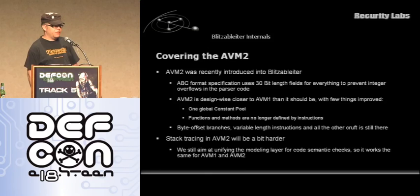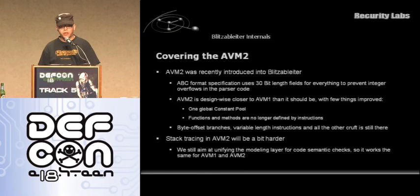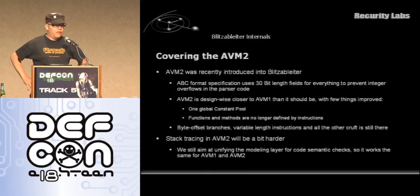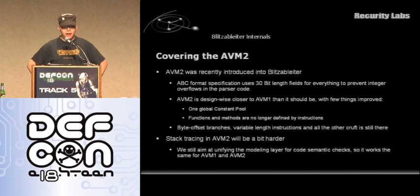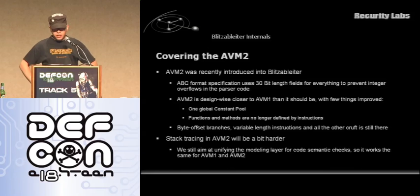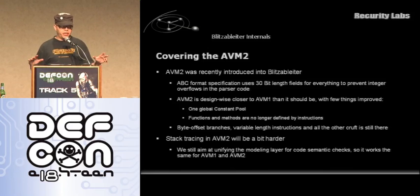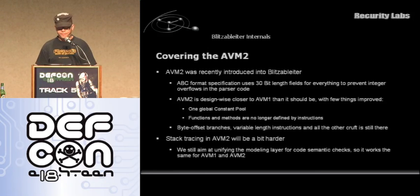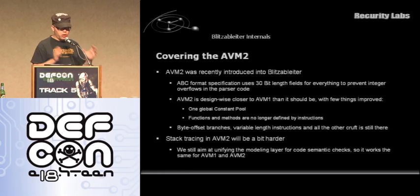Other than that, AVM2 is design-wise a lot better than its predecessor as it should be. They finally figured out that you should have one constant pool and that you should not define functions by instructions. The stack tracing is a little bit harder, but the end goal is to have it all unified so that whoever wants to enforce rules in the code can model their contractual requirements into actual code patches at a high enough abstraction level.